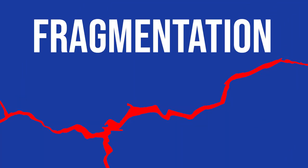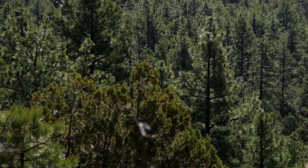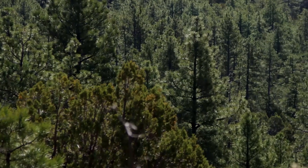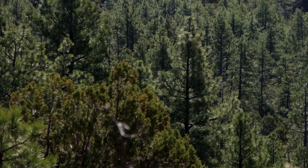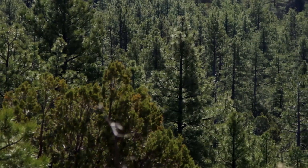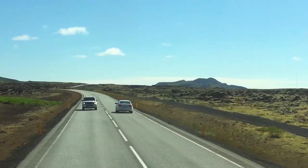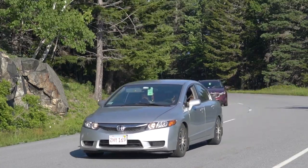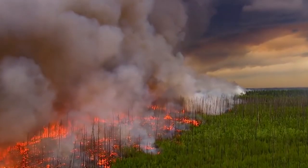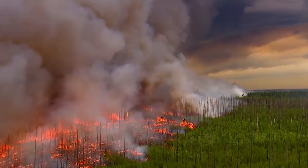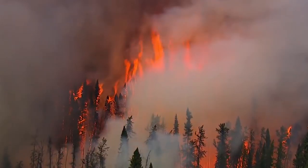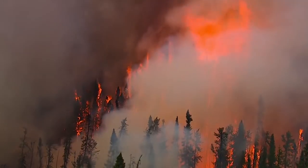Fragmentation occurs when habitat is chopped up into smaller pieces, which may not be large or connected enough to find mates, support migration, or find food. Most commonly, roads forming impenetrable borders are the primary culprit, but the clearing of vegetation from fires or urbanization can also be a cause.